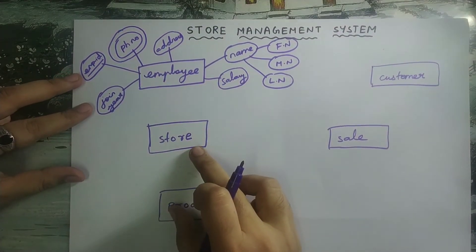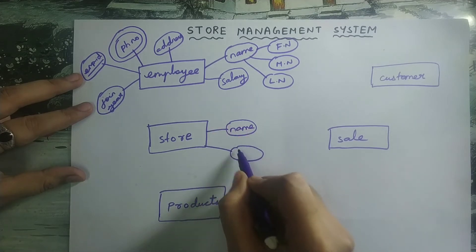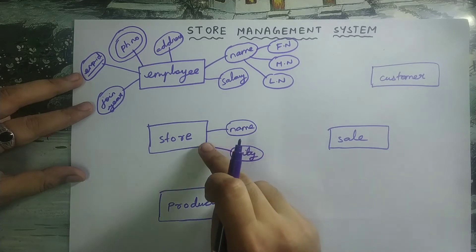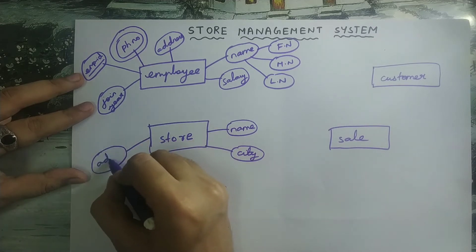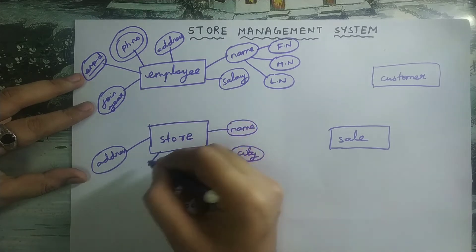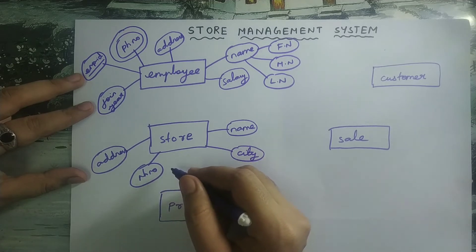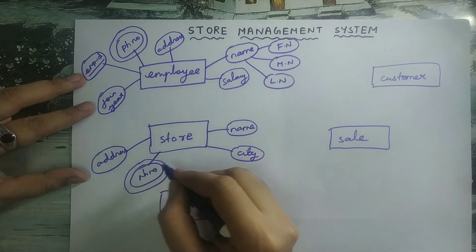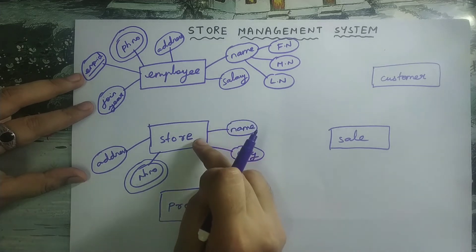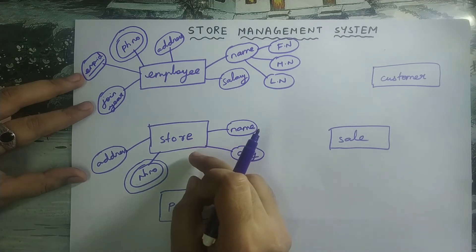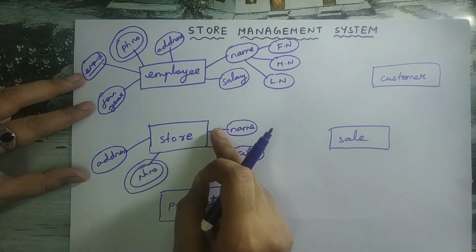Next let us look into the attributes of store. Store will have a name, then city will be an attribute — in which city the store is located. Next, address of the store. Next, phone number can also be an attribute of store — it must be written inside a double oval because it is a multi-value attribute. You can have one landline number and one personal number for the store, so you can have more than one phone number.